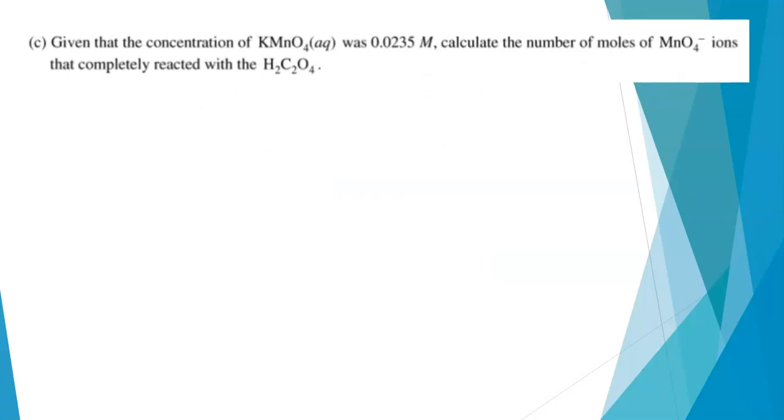We're given the concentration of the potassium permanganate solution that was used. We're told it's 0.0235 molar. Calculate the number of moles of permanganate ions that reacted. Well, let's think about what we know. We know the molarity. We're just given that. In part B, we had found the volume of permanganate solution that was used. So we know a molarity. We know a volume. From that, we can calculate moles. We know that molarity is defined as moles of solute over the volume of the solution in liters. I can rearrange this easily to isolate moles of permanganate since that's what I want to solve for. So molarity of the solution times its volume in liters will give me the moles that I want.